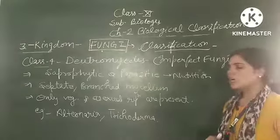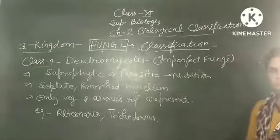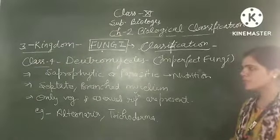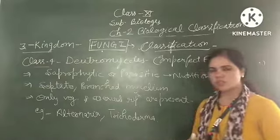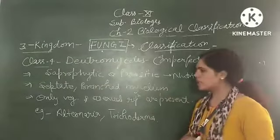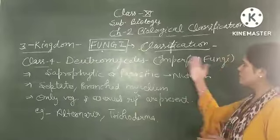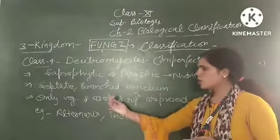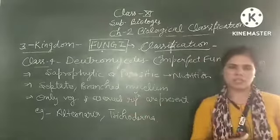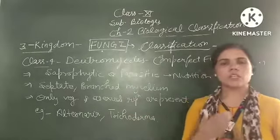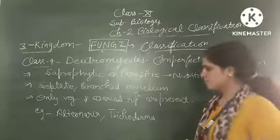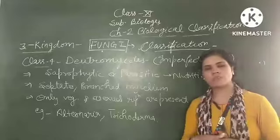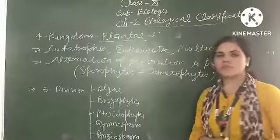This is the fourth class of kingdom Fungi, Deuteromycetes. Why we call it imperfect fungi? Because in these fungi, there is only vegetative or asexual reproduction present. Sexual reproduction is absent in this class. The example of this class is Alternaria and Trichoderma. These fungi are mostly pathogenic in nature.